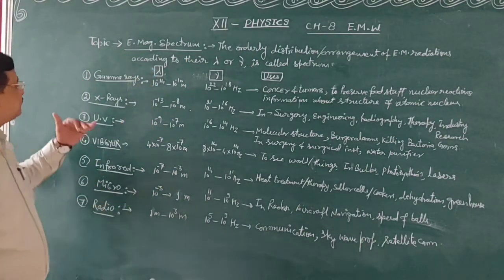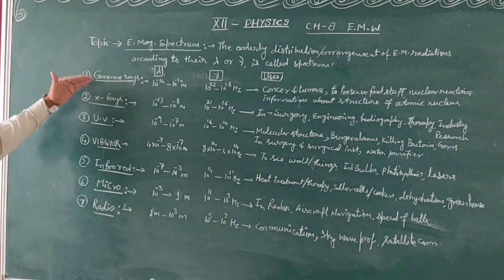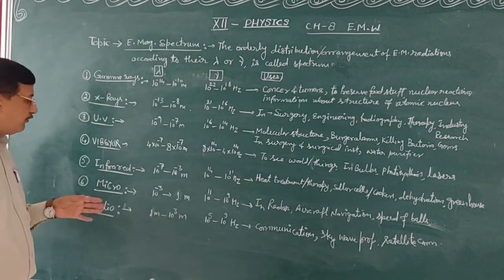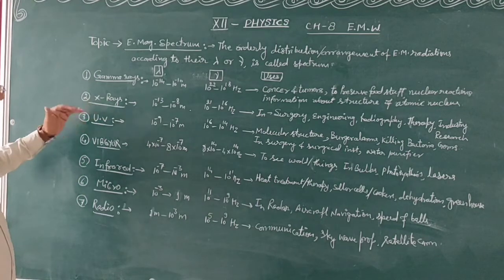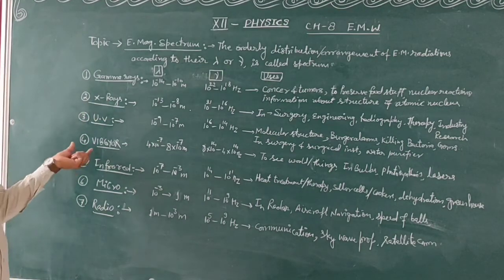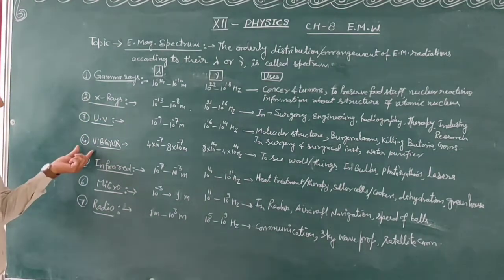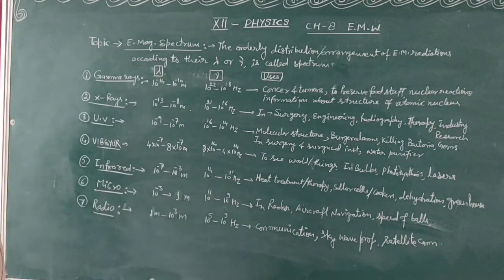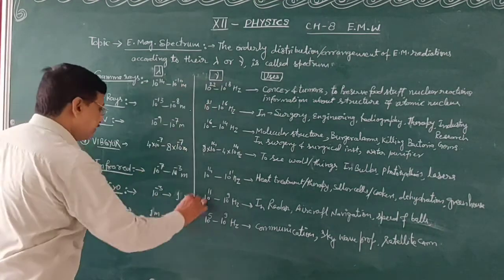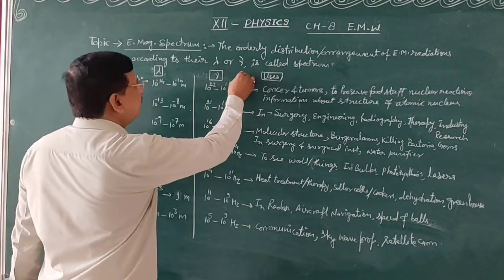Now, this is the increasing order of wavelength and increasing order of frequency: Gamma rays, X-rays, UV light, visible light, infrared rays, microwaves and radio waves. Here are their wavelengths and then frequency and uses.